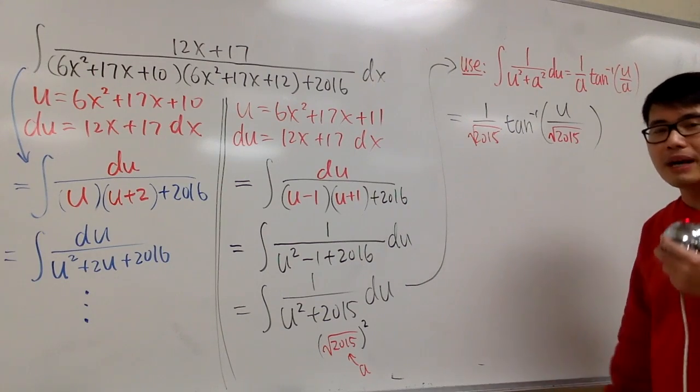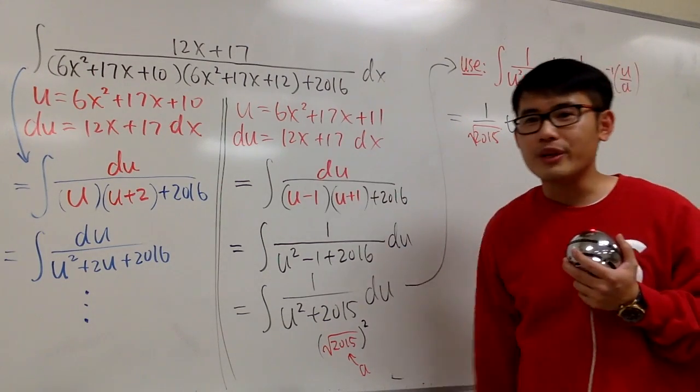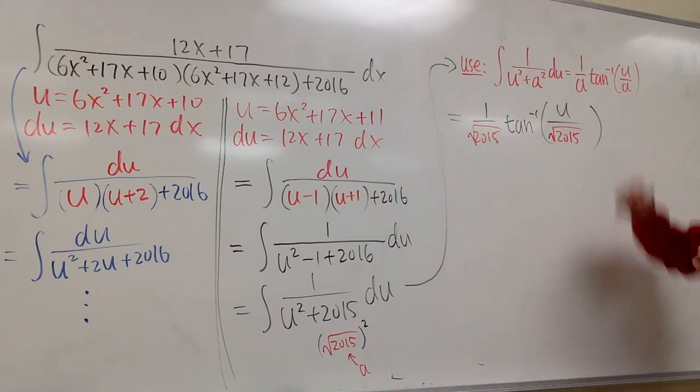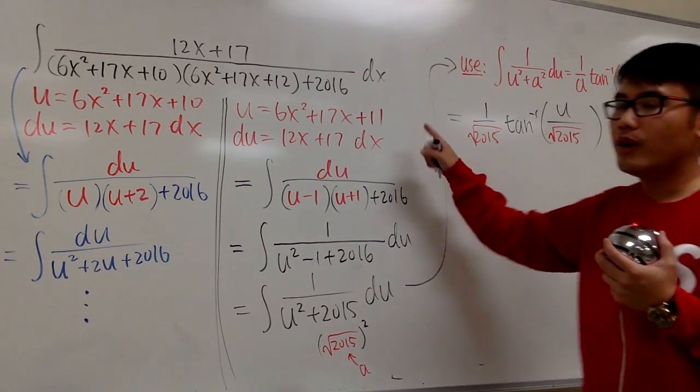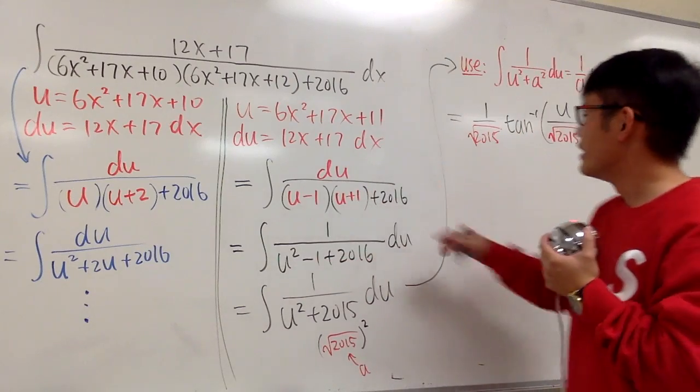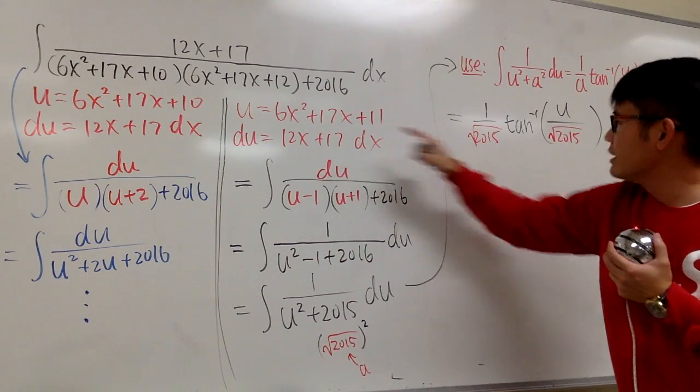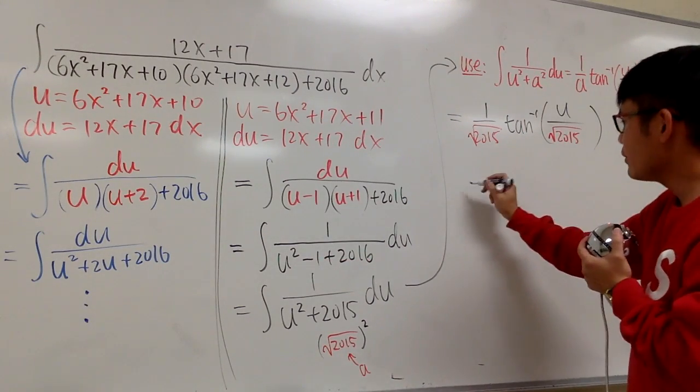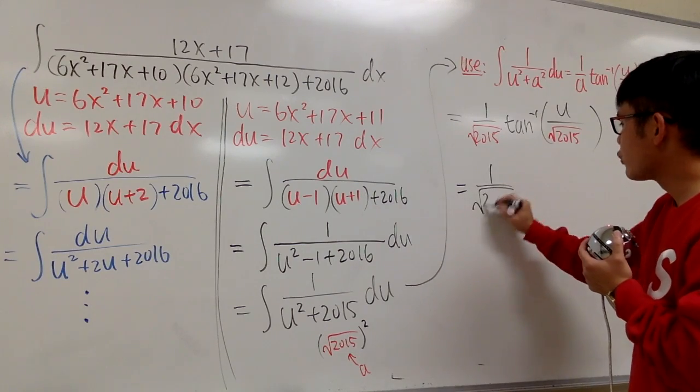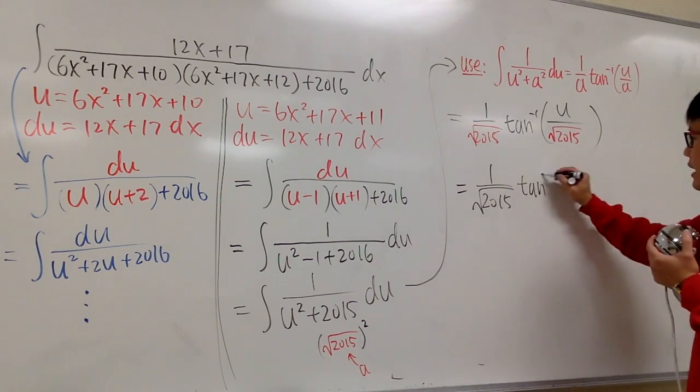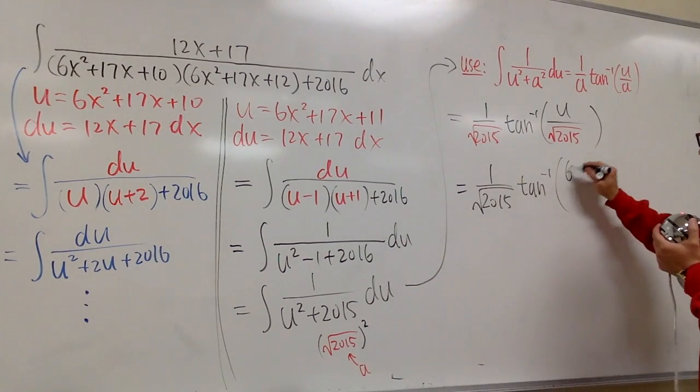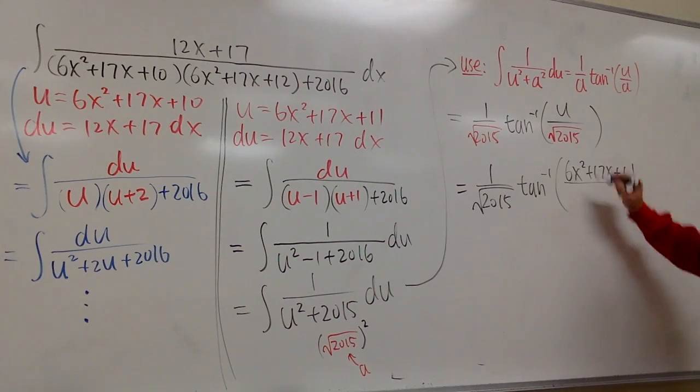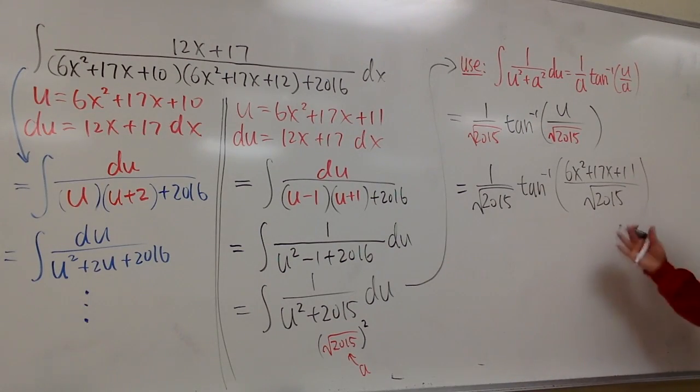That's the integration part. And we are done with the integration, but we are not done with the original integral yet, because we are still in the u world. u is this, okay? I didn't continue with that, so u is this. At the end, all I have to do is plug in this into u. So finally, we will have 1 over square root of 2015 times the inverse tangent. u is that 6x squared plus 17x plus 11 over square root of 2015. And we are so done. So at the end, we put a plus C. And of course, I would like to box the answer for you guys.